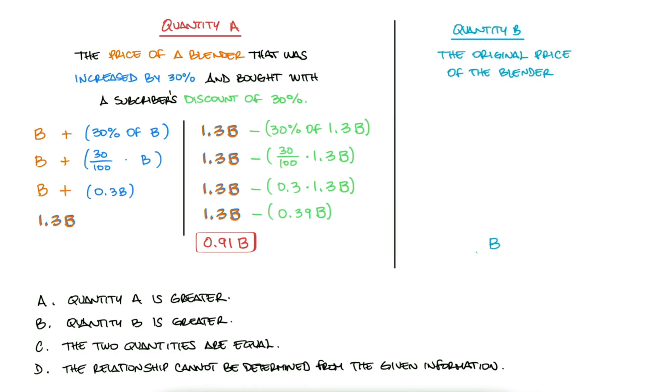Since the original price of the blender is just B, the answer to this question would be B, quantity B is greater, since B is greater than 0.91B.